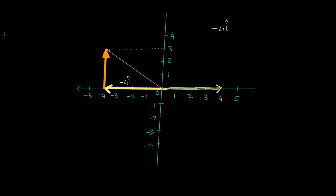Now the y-component: this vector is of length 3 and it points in the positive y-direction — the direction of ĵ, which points upwards. So this just needs to be multiplied by 3. Whatever vector this is, let's call it A — it can be written as -4î + 3ĵ.